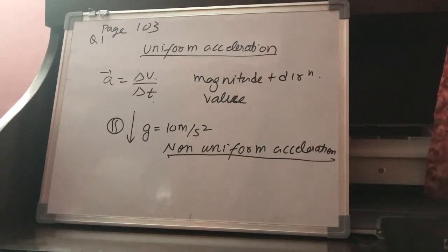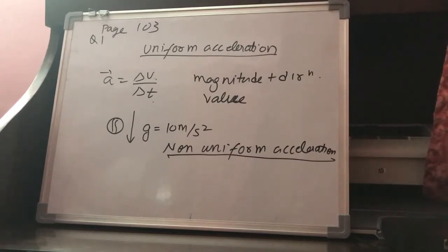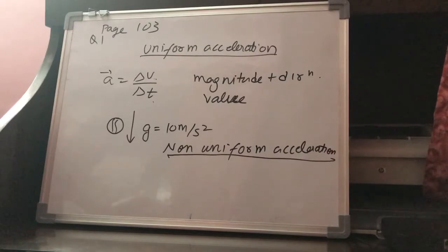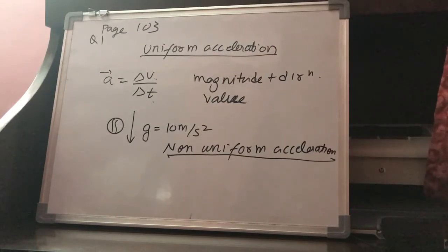Also, if the change in speed is the same per second but the direction is changing, there is still a change in velocity. If the direction of acceleration is changing, even if its magnitude remains the same, the acceleration is said to be non-uniform. We will consider this further when we discuss uniform circular motion in later lectures.